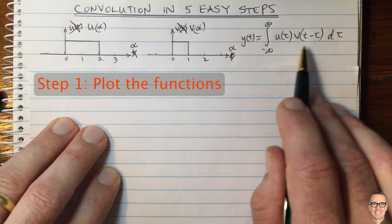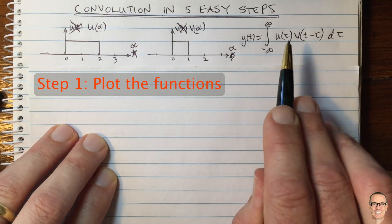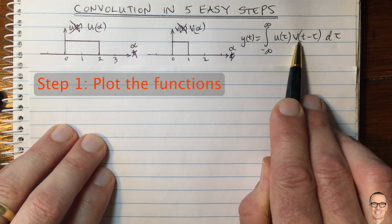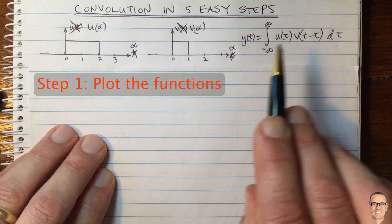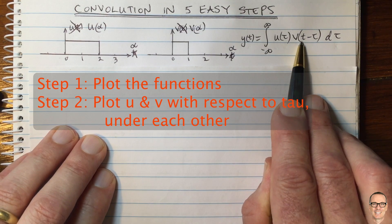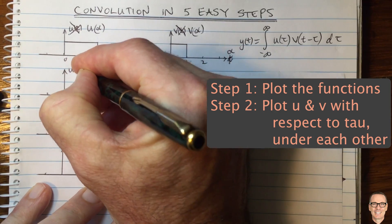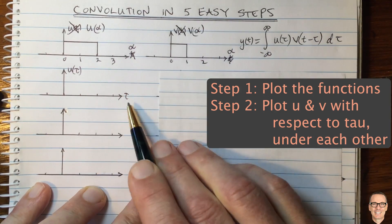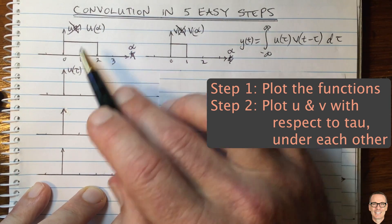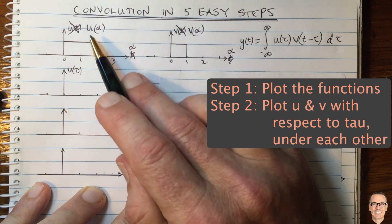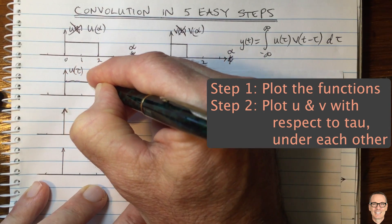Another thing to note is that this integral is over the variable tau. So when we plot these functions with respect to each other, we need to do it as a function of tau. That's step two: plot these functions underneath each other as a function of tau. The first function, u of tau, we're plotting with respect to tau — and you can clearly see it's exactly the same function as the one above; we're just changing from alpha to tau.